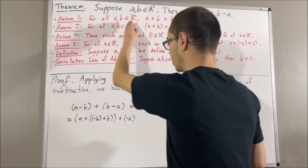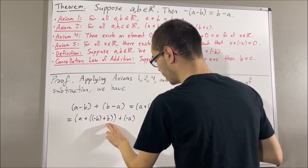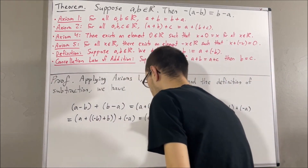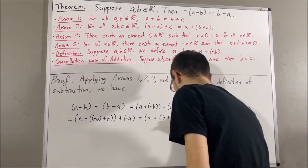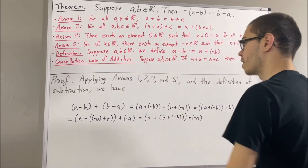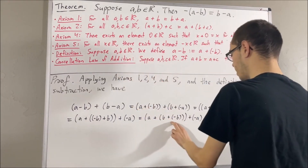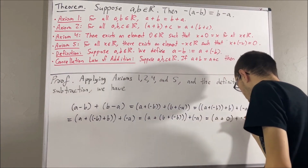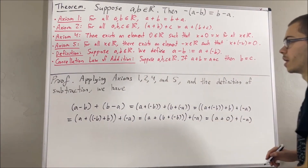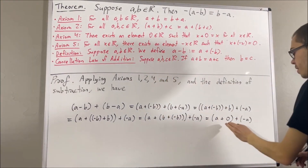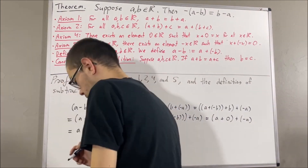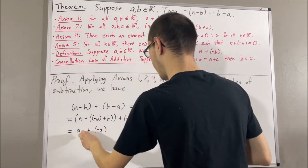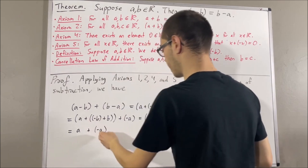Then, by axiom 1, the negative of b plus b is equal to b plus the negative of b. And then, by axiom 5, b plus the negative of b is equal to 0. And then, by axiom 4, a plus 0 is equal to a. And then, by axiom 5, a plus the negative of a is equal to 0.